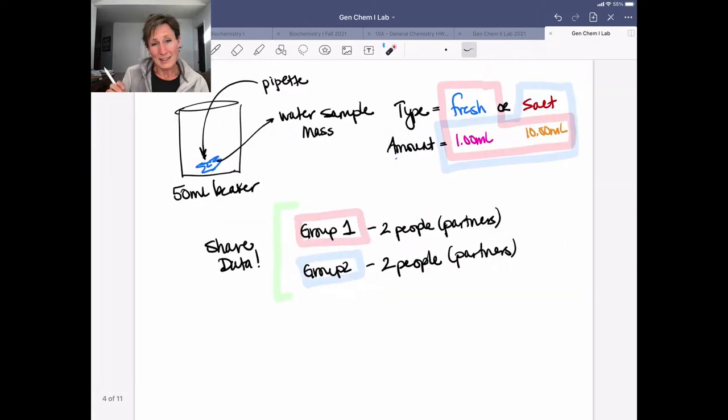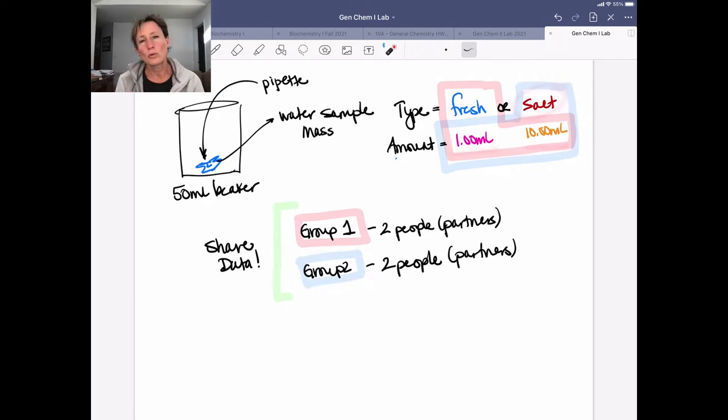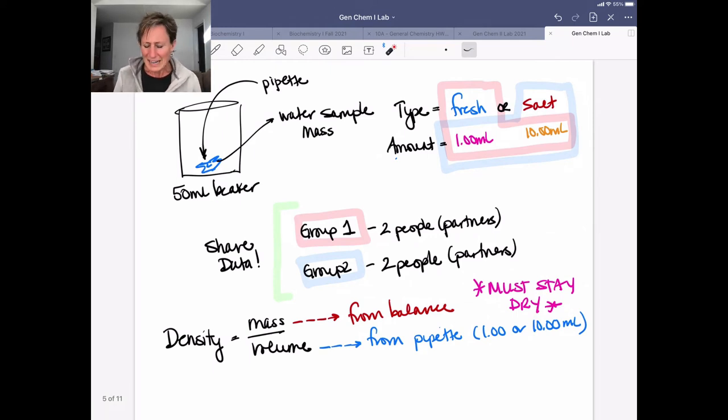So beyond this, you're working with a partner, but you're also going to find another team to share data with. Because one group is going to be a fresh water group, and so those two people are going to be using fresh water and then measuring it at two different volumes. And then a second group is going to be using salt water, again measuring it at two different volumes. So in order to have this matrix of four data sets, you're going to trade and share data with another set of people in the lab. So what are we doing with this data? Why is it important?